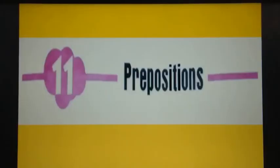बच्चे, अभी हमने एक activity की और उसमें कुछ words use किये — like above, below, over, under, on, beside, between. ये words क्या होते हैं बच्चे? Prepositions. इन्हें क्या बोलते हैं? Prepositions. ये क्या show करते हैं? किसी भी object की position.